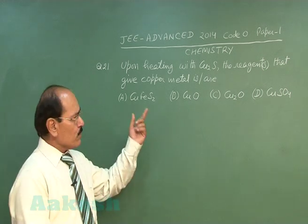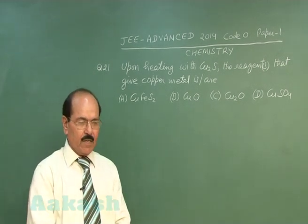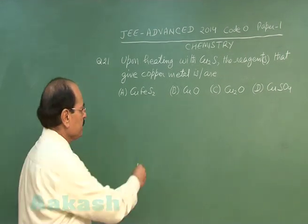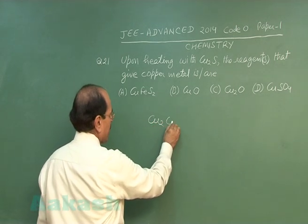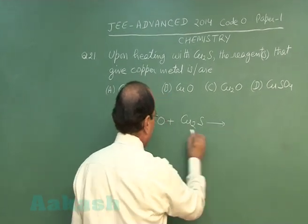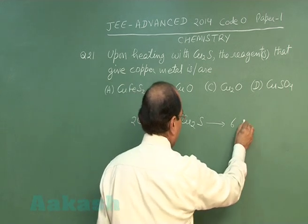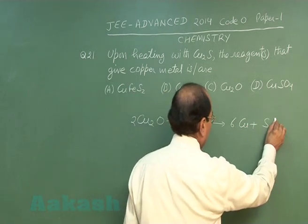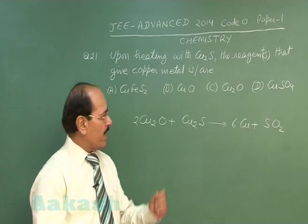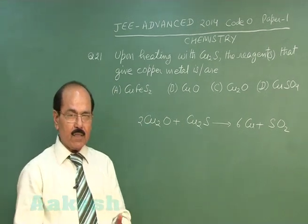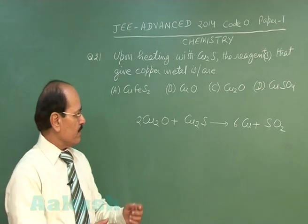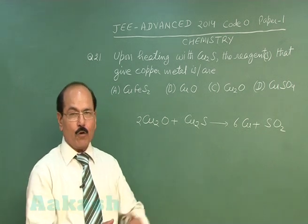Cuprous oxide (Cu₂O) is known to react with cuprous sulphide on heating to give blister copper; sulphur dioxide is the byproduct. Out of the four options, copper sulphate and cupric oxide (CuO) on heating give cuprous oxide, and since cuprous oxide is formed, it will also react with cuprous sulphide to give copper metal.